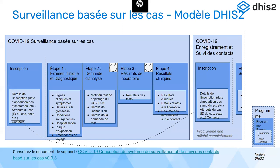Au début, nous avons bien sûr l'enregistrement de la personne dans le système. Ici, nous prenons les informations liées aux attributs, notamment à la date d'apparition des symptômes et ainsi de suite. Son ID sera noté, et si le pays décide d'avoir un ID, toutes ces informations seront notées, ce qui va déclencher d'autres étapes dans la surveillance. Il y aura bien sûr une phase d'examen clinique où nous allons collecter les informations liées aux symptômes et aux signes cliniques, savoir si la personne a été hospitalisée et les risques d'exposition qui entourent cette personne.